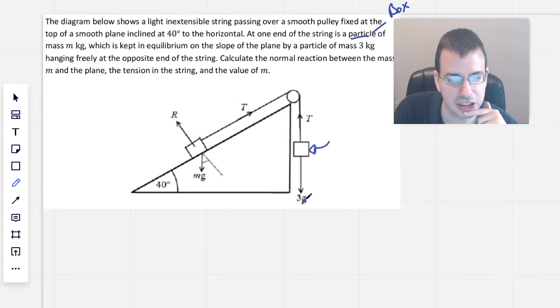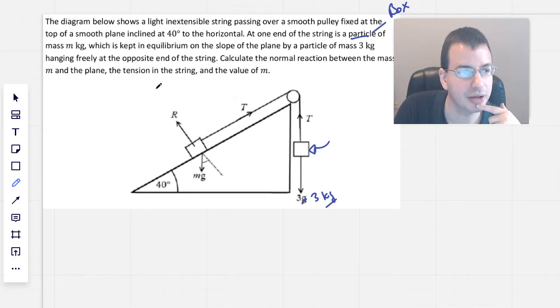I'm going to change that to, I'm going to say instead of 3 grams, it's going to be 3 kilograms, which is kept in equilibrium on the slope of the plane by a particle of mass 3 kilograms. One end of the string is a particle of mass m kilograms, so this is going to be the particle of m kilograms, which is kept by a particle of mass 3 kilograms.